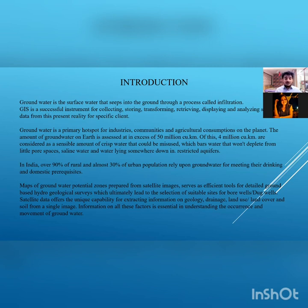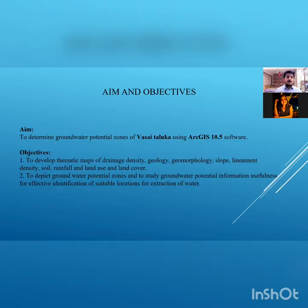Groundwater is not available in abundance everywhere, and we are here to determine that with this project. Our aim is to determine groundwater potential zones of Vasai Taluka using ArcGIS 10.5 software. The objective is to develop thematic maps of drainage density, lineament density, geology, geomorphology, slope, soil, rainfall, land use and land cover, and to depict groundwater potential zones and study their usefulness for effective identification and suitable locations for water extraction.